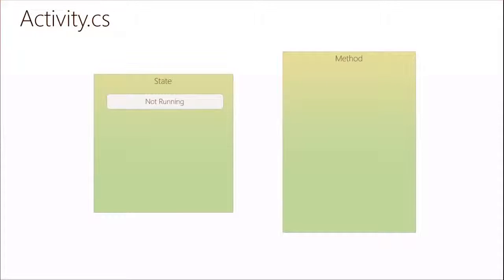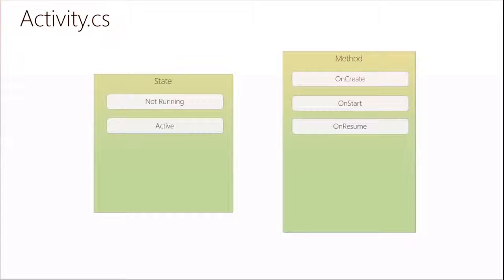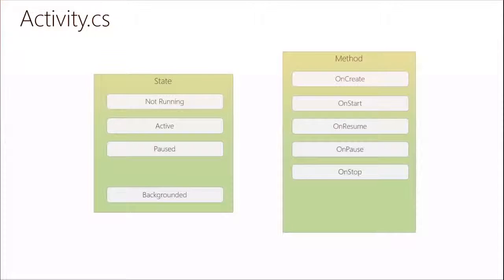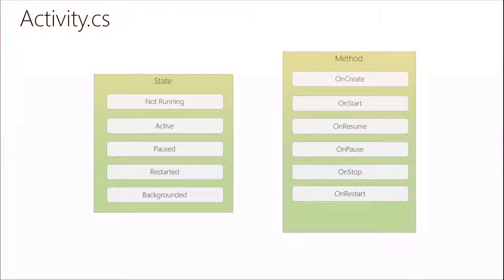In Activity.cs is where we get our notifications for states, with overrides similar to iOS, and these are coming straight from the Java SDK — not something Xamarin made up. So from not running, going active you get onCreate, onStart, onResume. When a phone call comes in, you get onPause; backgrounded gives you onStop; then restarting gives you onRestart, onStart, and then onResume again. Eventually you may get onDestroy, though you can't rely on the destroyed method being called.